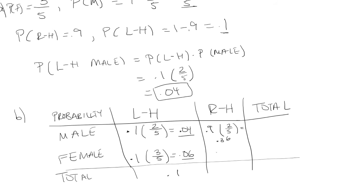The probability a person is right-handed is 0.9. Probability a person is female is three-fifths. Multiply these and get 0.54.